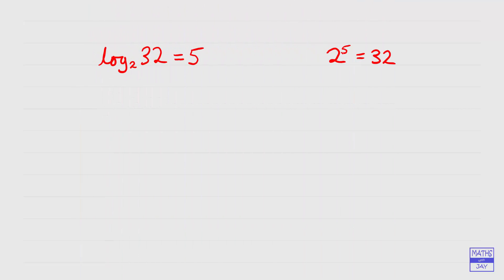Now let's look at another one: log to base 5 of 125. Again, we're thinking about 5 to the power of something equals 125. How many times do we need to multiply 5 by itself to get 125? Well, 5 times 5 is 25, multiply by 5 again and we get 125. So that's 5 to the power of 3, meaning our log is 3.